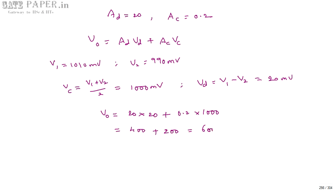So V0 = 600 millivolts when V1 is 1010 millivolts and V2 is 990 millivolts. We expected only 400 millivolts from the differential gain alone, but due to the finite CMRR, the common mode gain adds 200 millivolts, giving a total output of 600 millivolts.